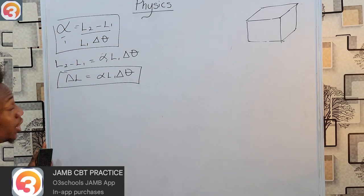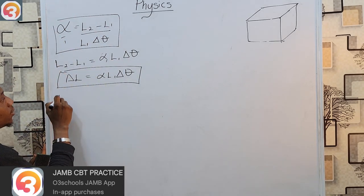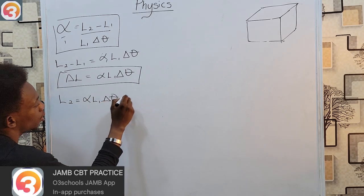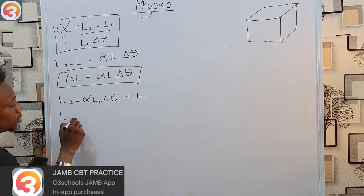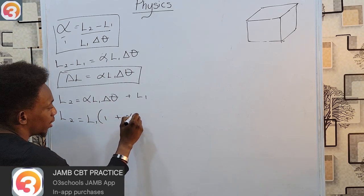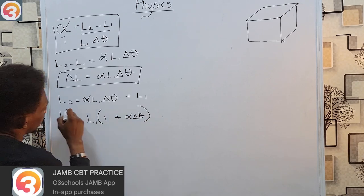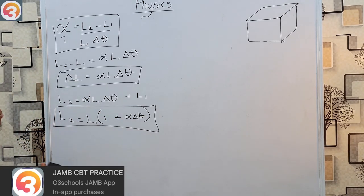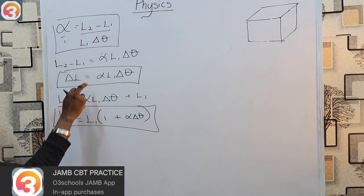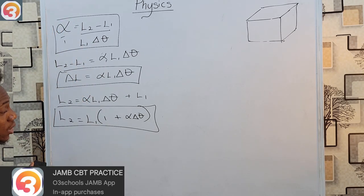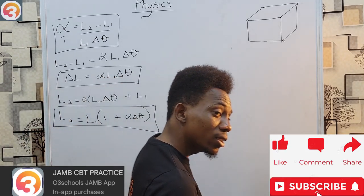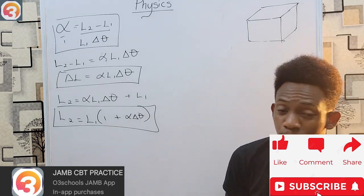Another useful rearrangement: L2 = L1(1 + alpha · Δθ). So to find expansivity use the first formula; to find change in length use the second; and to find the new length directly use L2 = L1(1 + alpha · Δθ).